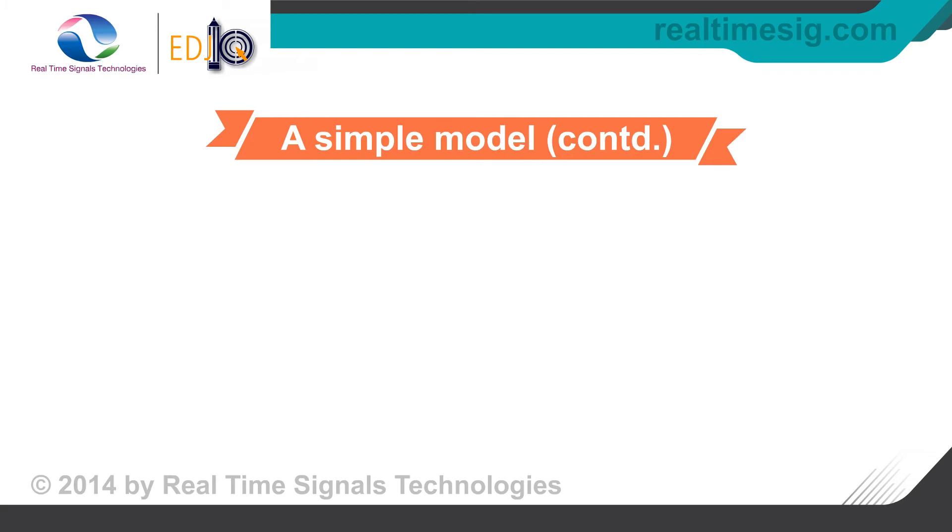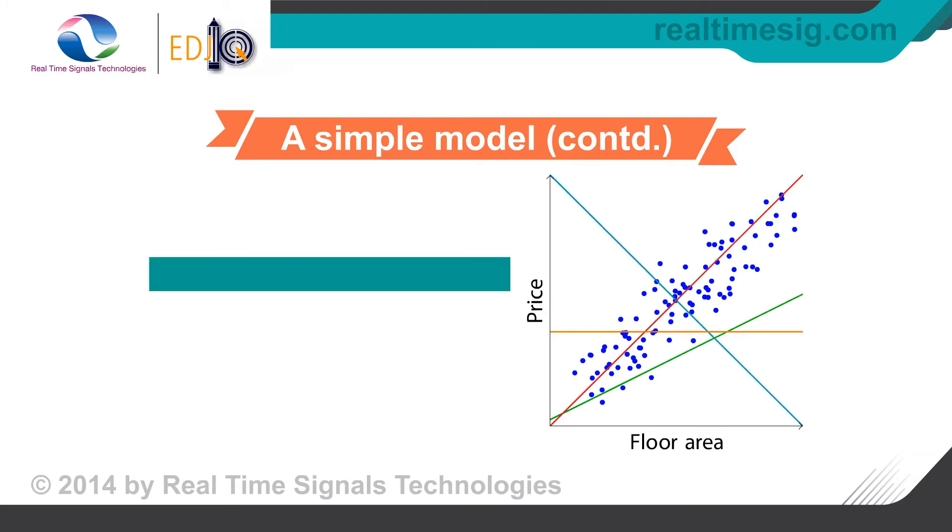Let us pose the problem mathematically. Using the variable y for the price of the house and the variable x as the floor area, we have the equation y equals mx plus c as the model describing the relationship between our dependent and independent variables.